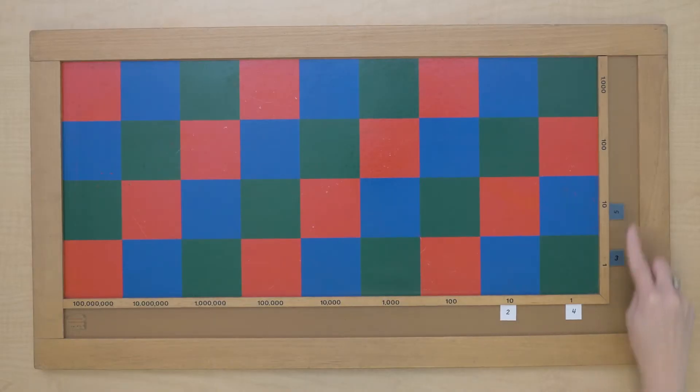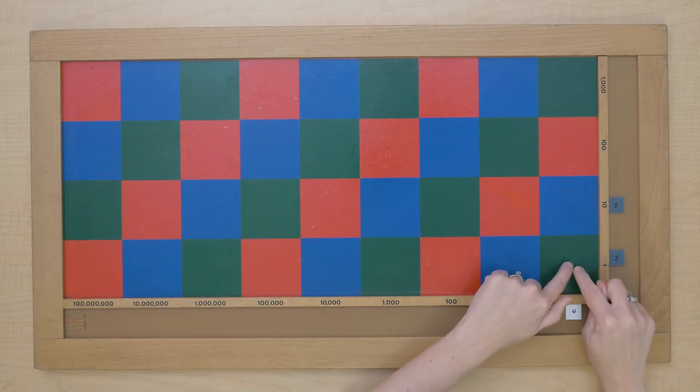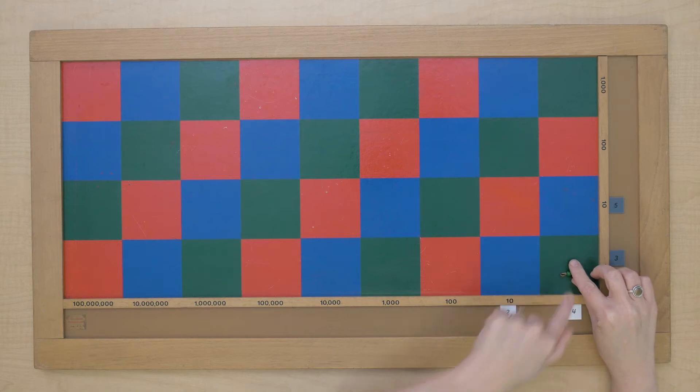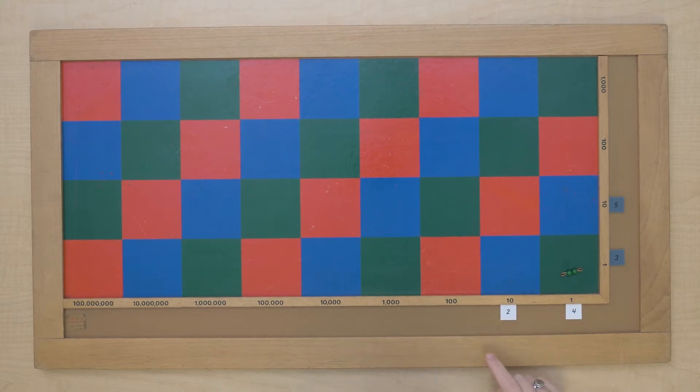Let's do 24 times 53. So that means we have this one category, one way we can get units, and four times three gives us 12. So I'm going to put the two here, but I'm going to remember the one, that one ten that I will just add on in my head after we've done the tens multiplications.